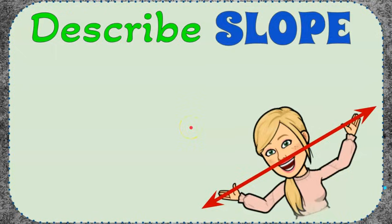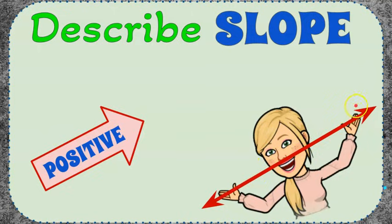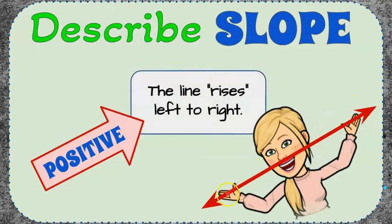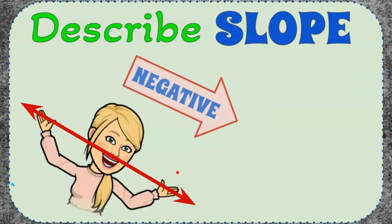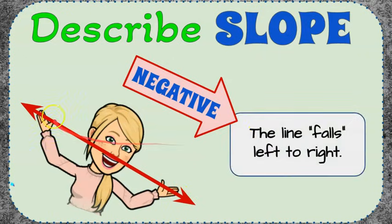Now let's understand how to describe slope. A line with a positive slope is rising left to right — you read a graph just like you read a page in a book, left to right. If it's increasing left to right, it has a positive slope. When we have a downward sloping line, we have a negative slope — it's going down left to right, giving us a negative slope.